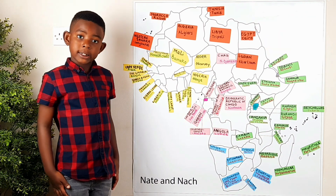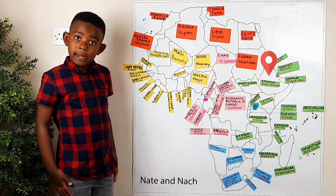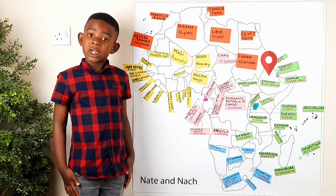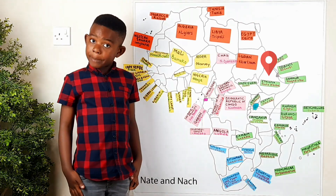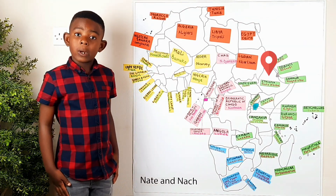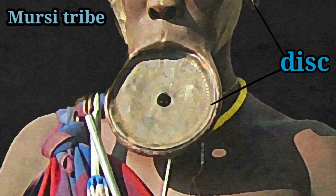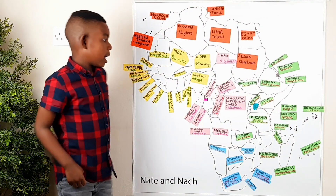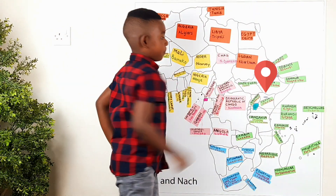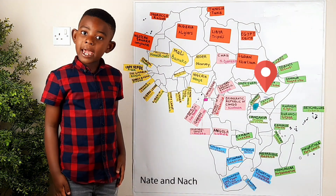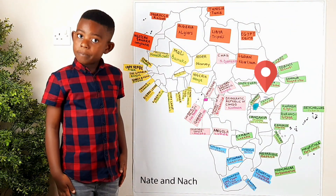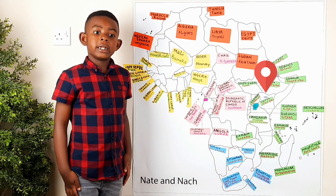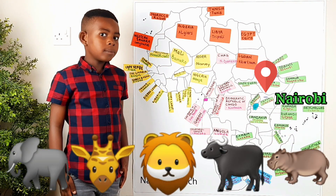Second fun fact: Ethiopia. The capital of Ethiopia is Addis Ababa. Did you know that in Ethiopia, the Mursi people wear discs on their lips and their ears? Our next fun fact: Kenya. The capital of Kenya is Nairobi and we find lots of animals to spot.